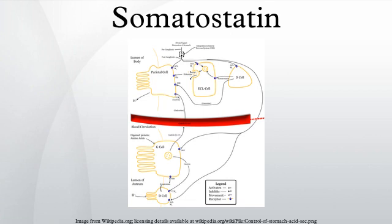The third duplication event in teleost fish created SS2, SS4, SS5, and two genes that were lost during the evolution of teleost fish. SS1 and SS2 also went through local duplications to give rise to SS6 and SS3.